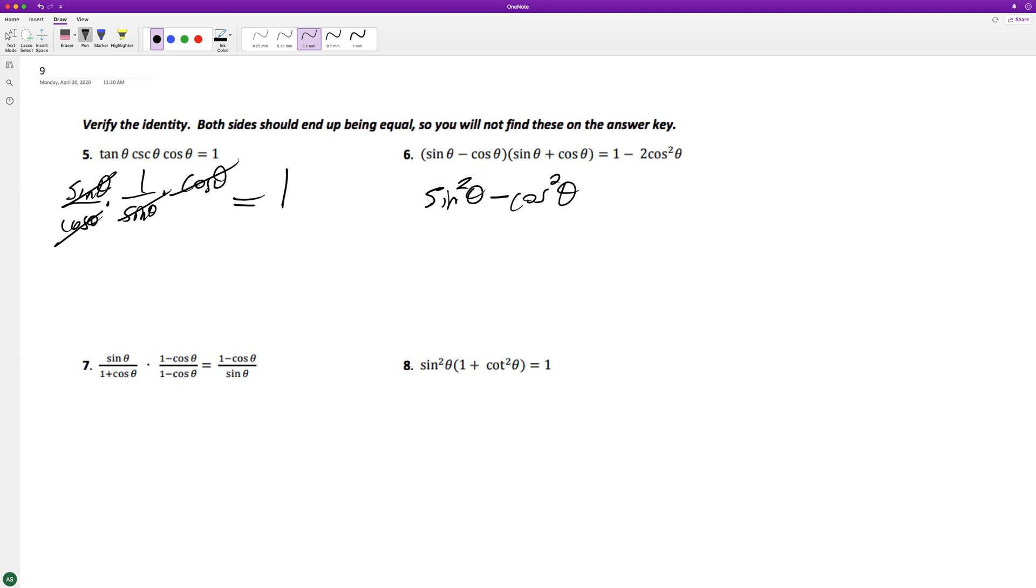So we have terms and cosines, so that means we should probably convert our sine squared into 1 minus cosine squared theta minus cosine squared theta, which becomes 1 minus 2 cosine squared theta. That's it for that one.